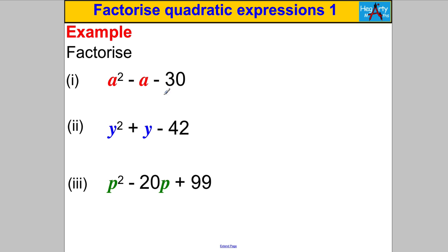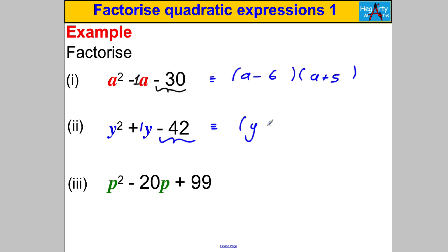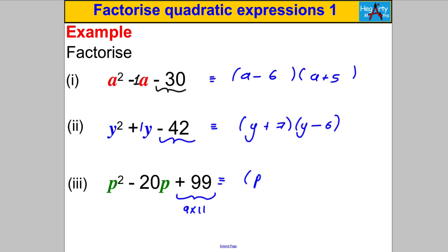The last set shows the variable doesn't have to be X. This one has a coefficient of 1 on the middle term — multiplying to −30 and adding to −1 gives (a − 6)(a + 5). Next: multiply to −42 and add to +1 gives (y + 7)(y − 6). The last one: multiply to 99 and add to −20 — that's −9 and −11, since −9 × −11 = 99 and −9 + (−11) = −20 — giving (p − 9)(p − 11). That's it for this video, thanks very much for watching.